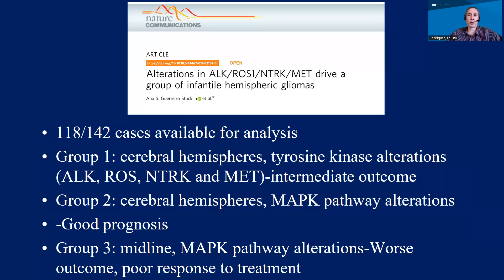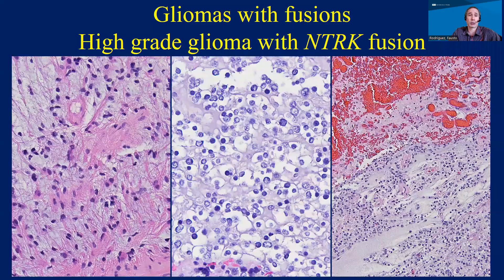There is also a group of tumors that occur in very young patients — infantile gliomas — that tend to have specific gene alterations that are different. The specifics of the genes are not as important for the purposes of this discussion, but the idea I want to convey is that you have different genetic alterations in these tumors depending on age and group, and these are starting to drive treatment in clinical trials. For example, a pediatric glioma that has an NTRK fusion can be targeted with specific drugs.